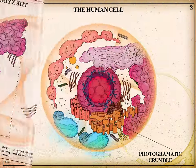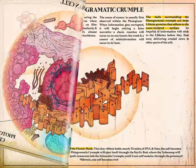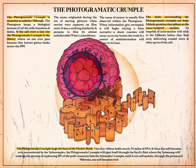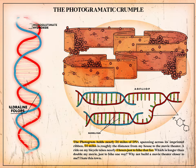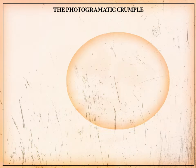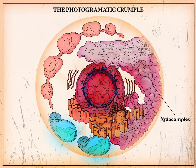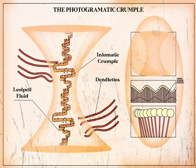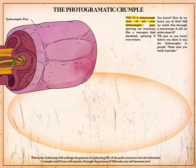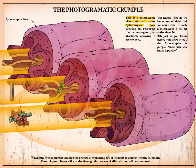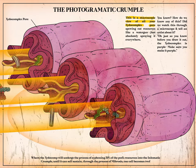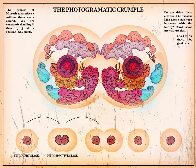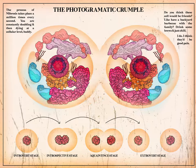A thin orange band made of glucose sugars called the photogrammatic crumple hugs the base of the flemix husk. This tiny ribbon holds nearly 34 miles of DNA. Once the cell becomes over-encumbered by the Zytocomplex, the photogrammatic crumple ejects itself through the Kexlix rod, where the Zytocomp siphons 30% of the pod's resources into the enlomatic crumple until it can self-sustain through the process of mybrosis. One cell becomes two.